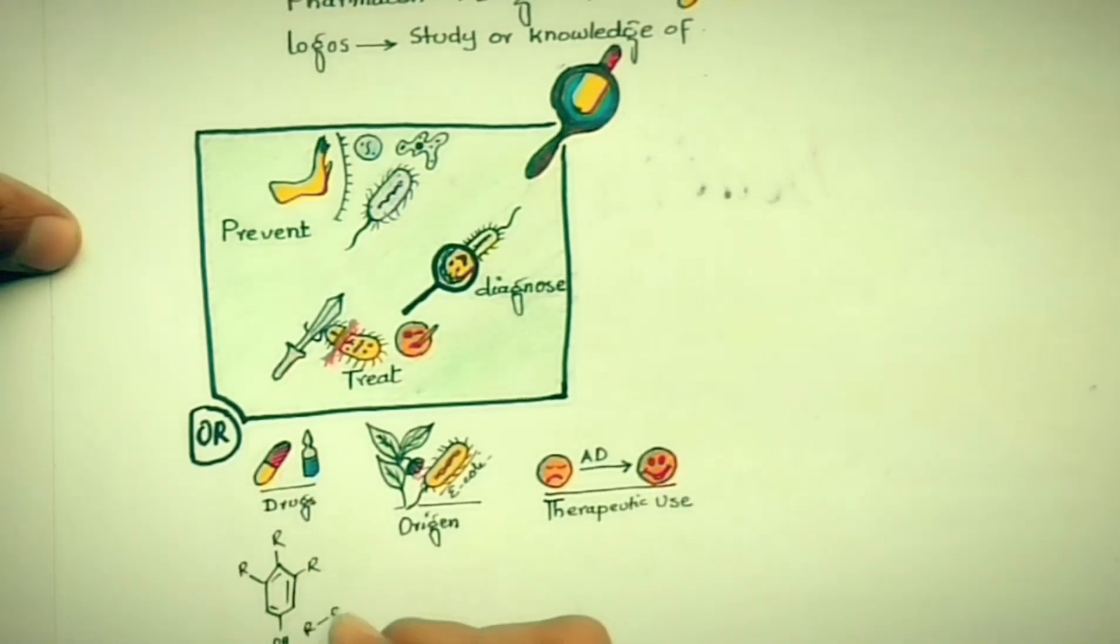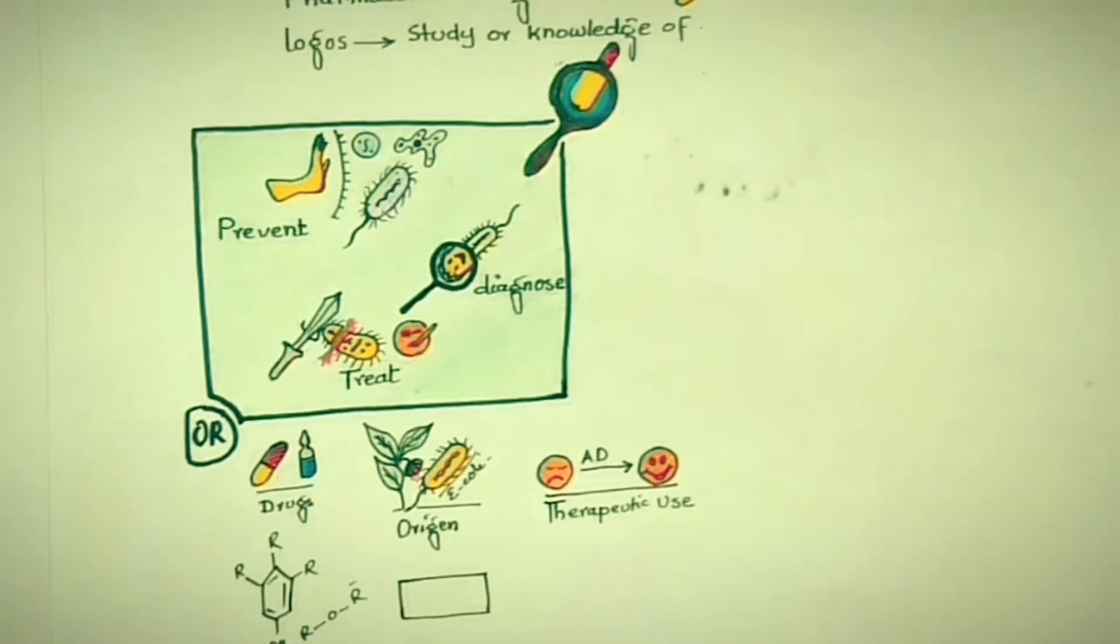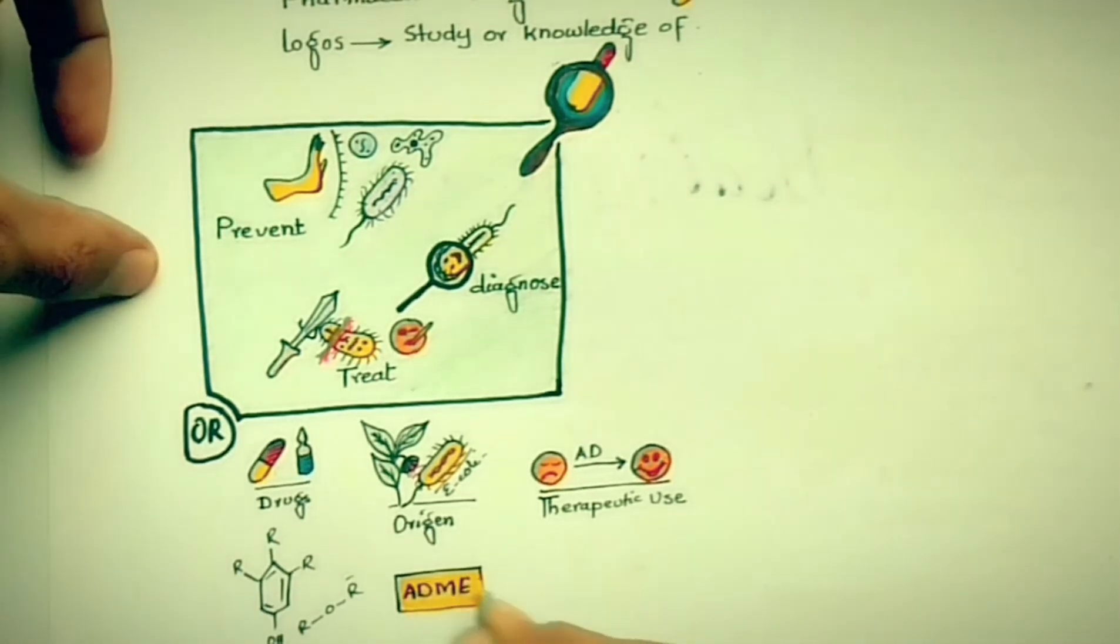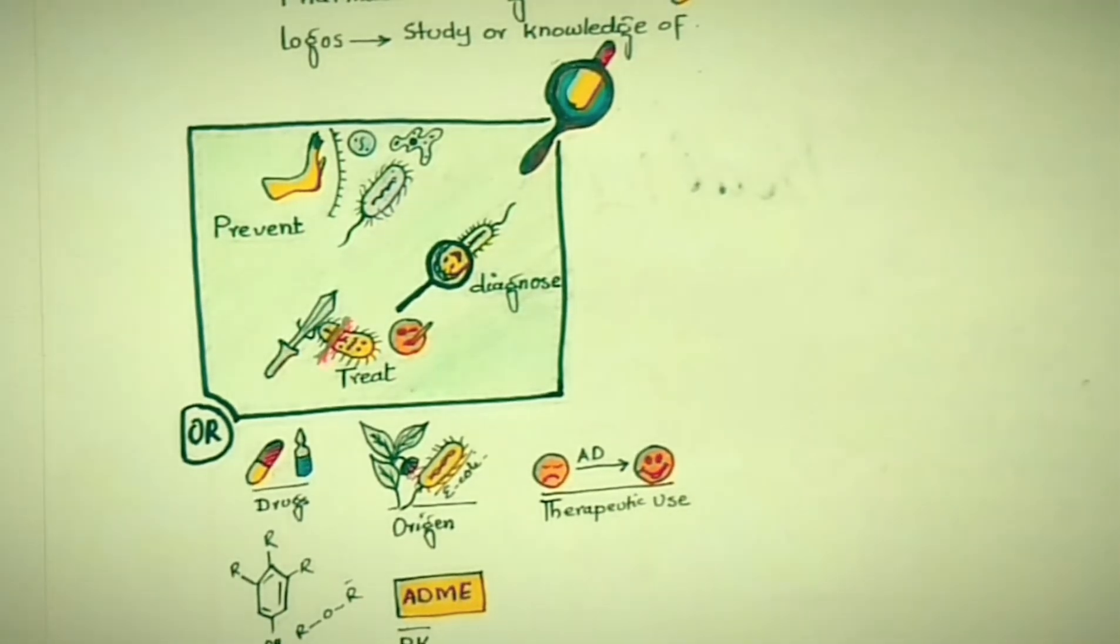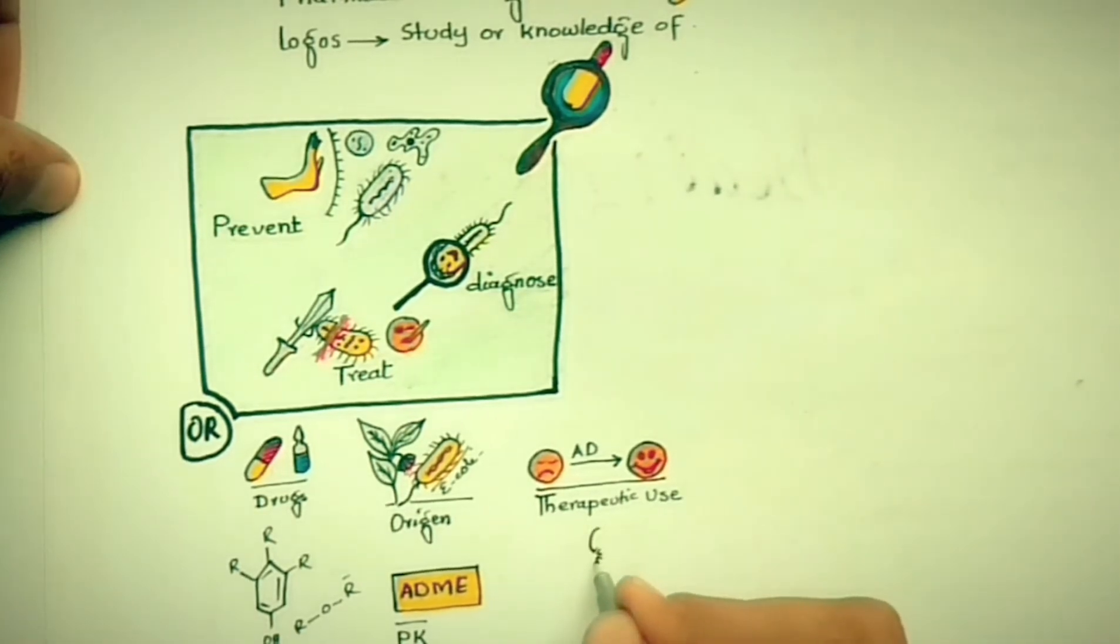Pharmacology also studies the composition of a drug—from which basic structures the drug is made. It also studies pharmacokinetics: how the drug is absorbed, distributed, metabolized, and eliminated from the body.